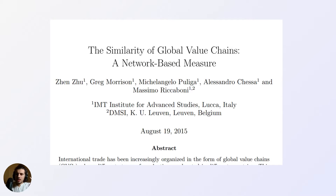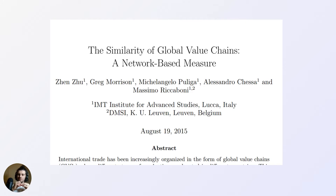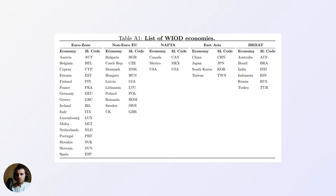In this paper — there's a link in the description — called 'The Similarity of Global Value Chain and Work-Based Measure,' they use cosine similarity in an interesting way. They constructed a graph where each node had a bunch of data features, and they ran cosine similarity on each of these nodes. In this particular case, they defined the nodes as individual sectors within a country, and the links were the value-added contribution relationships. With these nodes they were able to construct a vector for each individual sector node and compare every node to every other node.